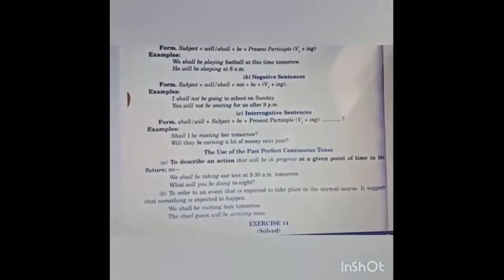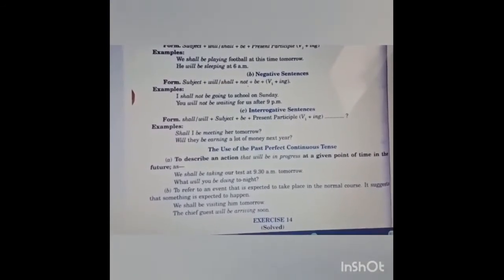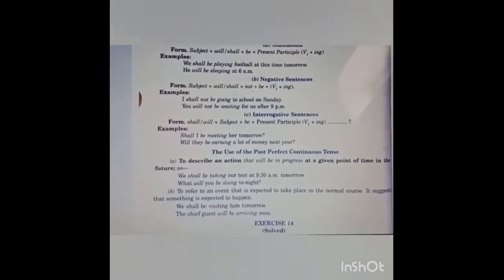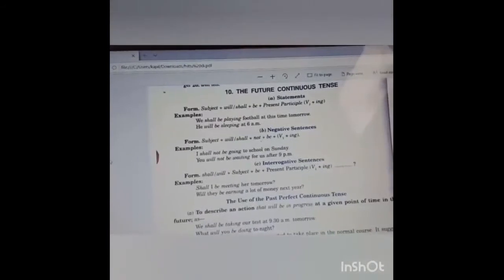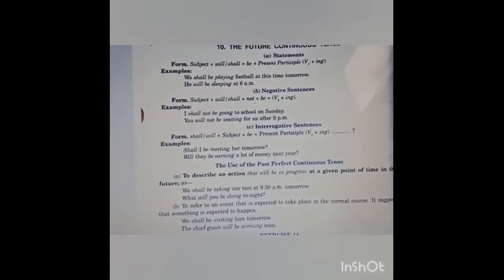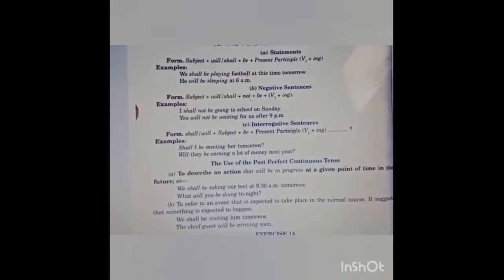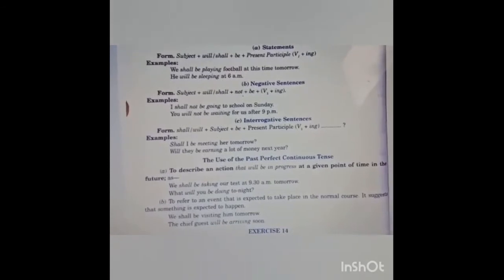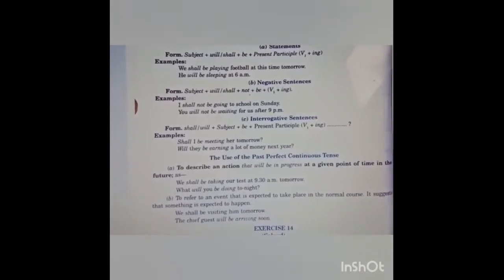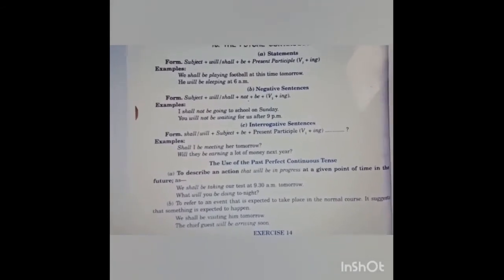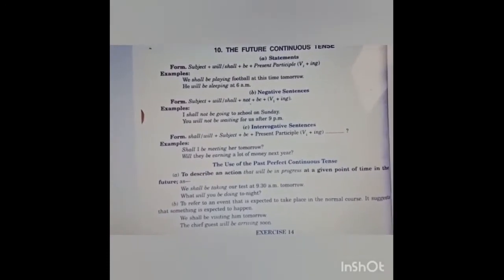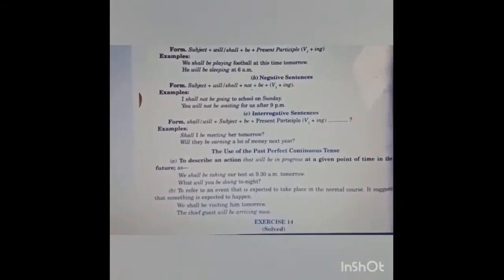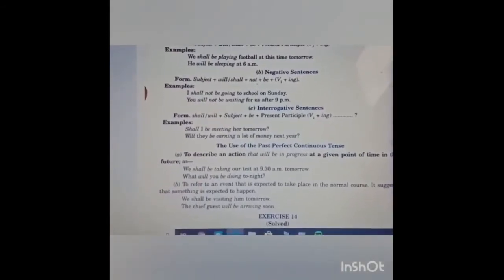For interrogative sentences: shall/will plus subject plus be plus present participle plus question mark. Example: shall I be meeting you tomorrow? Will they be earning a lot of money next year? Uses of future continuous tense: first, to describe an action that will be in progress at a given point of time in the future. Example: we shall be taking a test at 9 p.m. tomorrow. Second, to refer to an action that is expected to take place in the normal course. Example: we shall be leaving soon tomorrow.